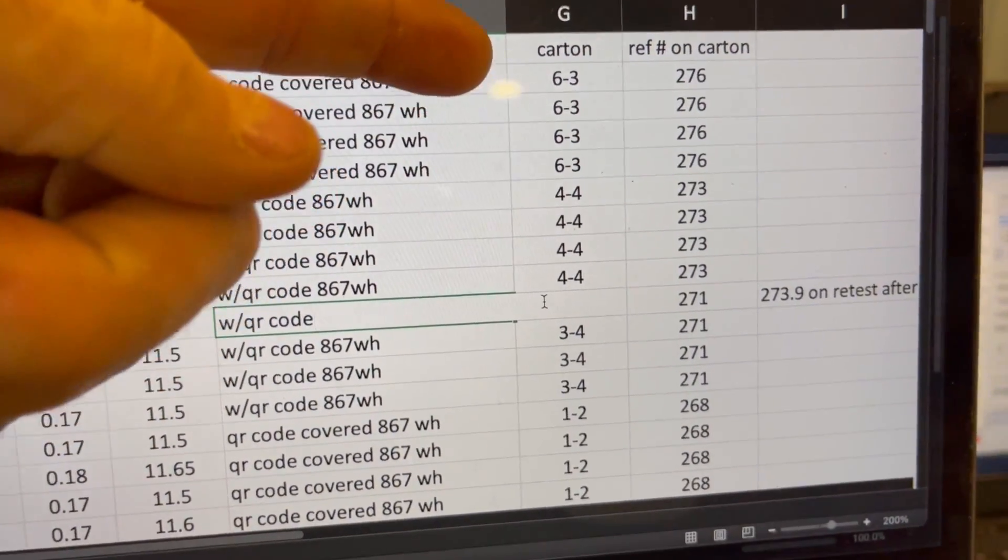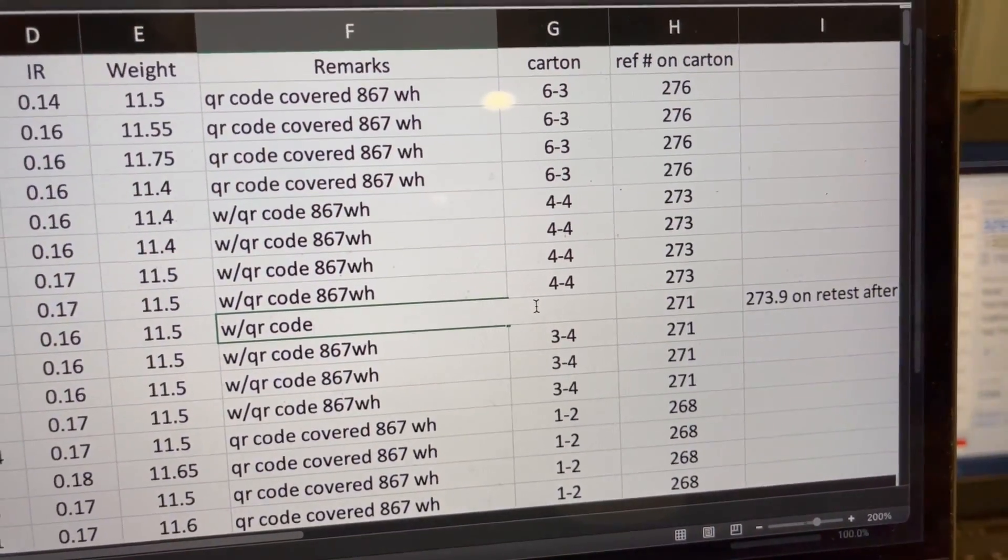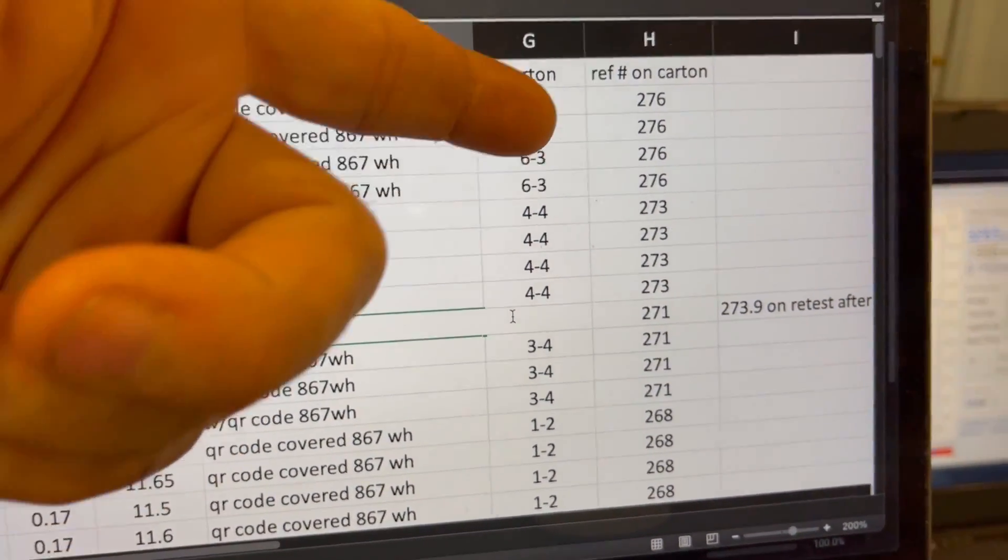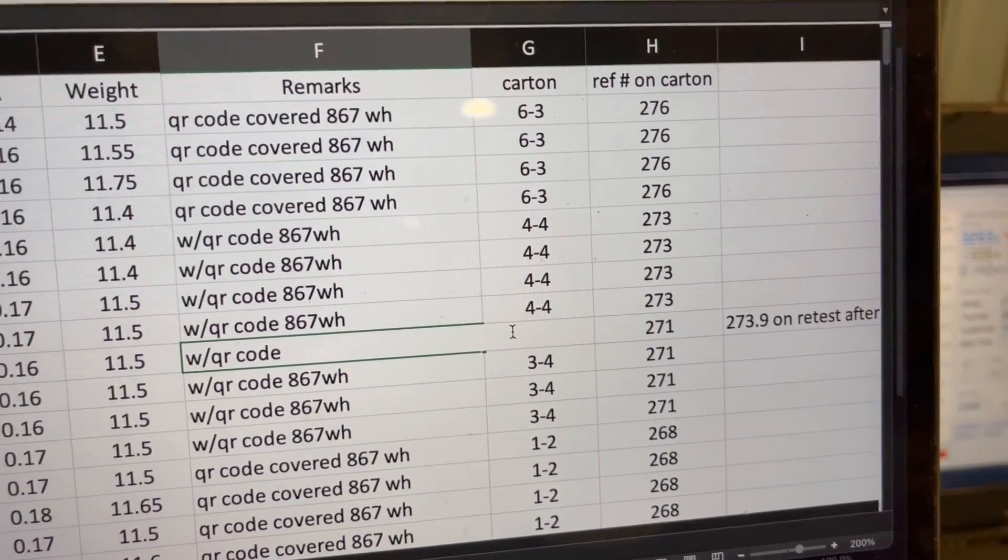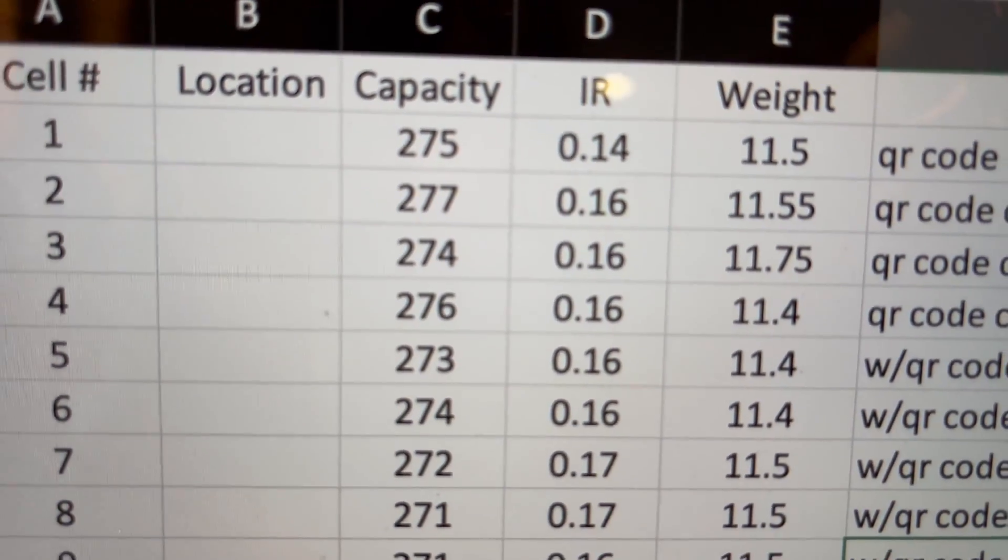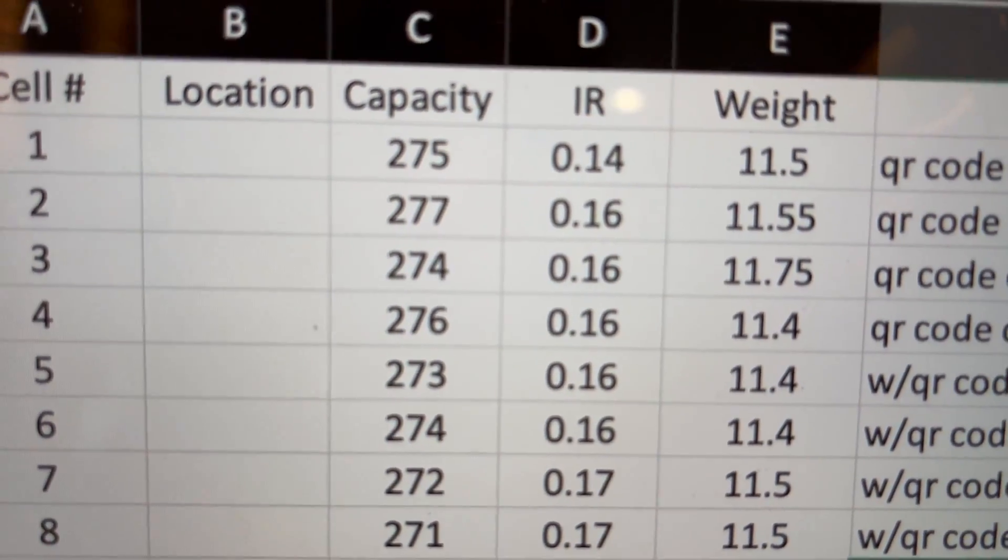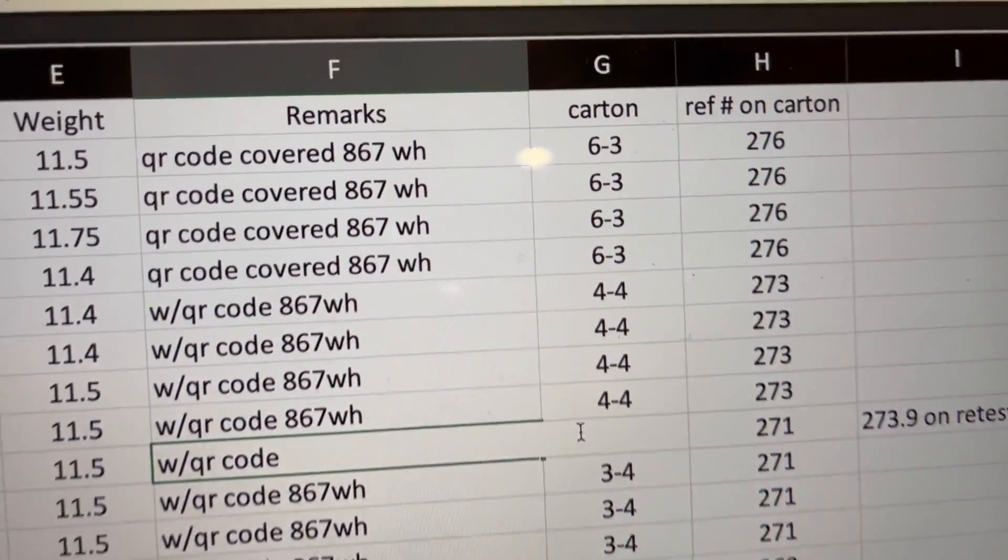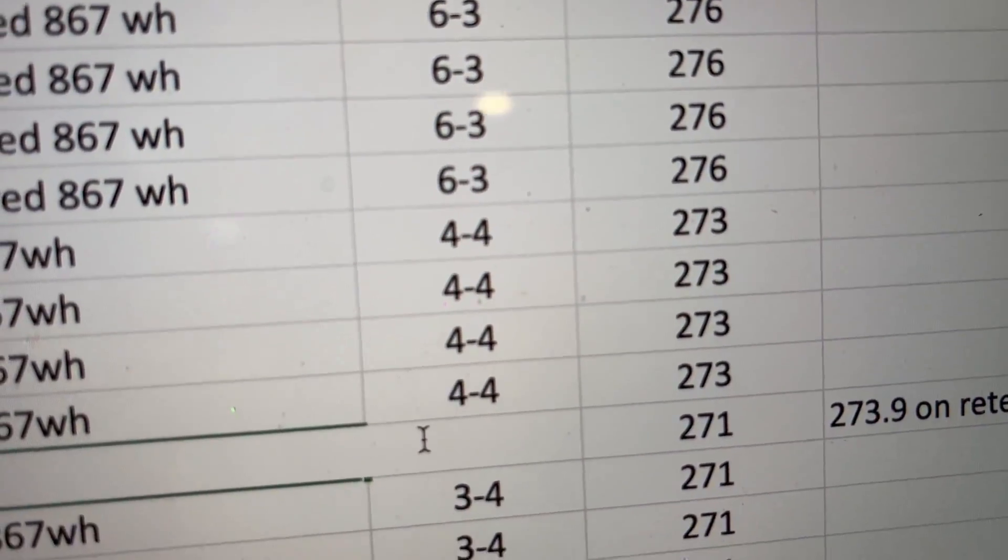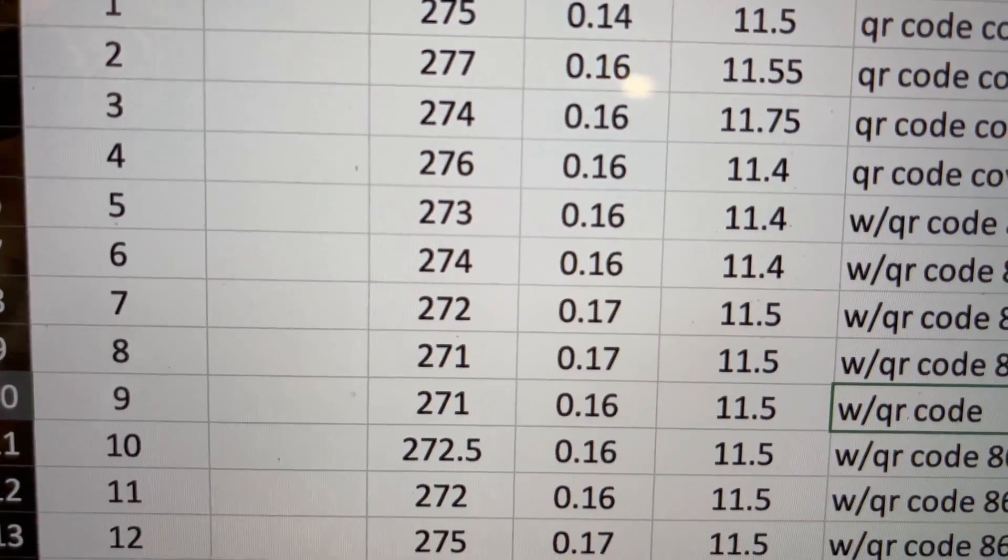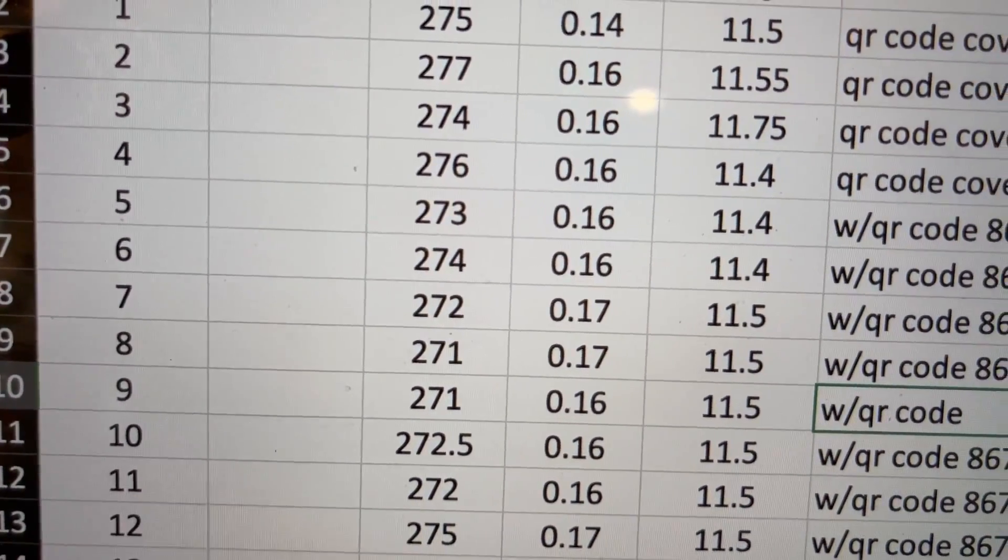These were supposed to be matched and it turns out they're not terrible. This box 6-3 was supposed to contain cells that tested at 276. It turns out they test at 275, 277, 274 and 276. I'm finding something similar with all of them. The next box that was supposed to have 273, it tested at 273, 274, 272 and 271.